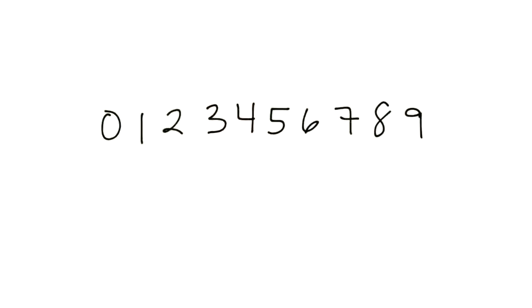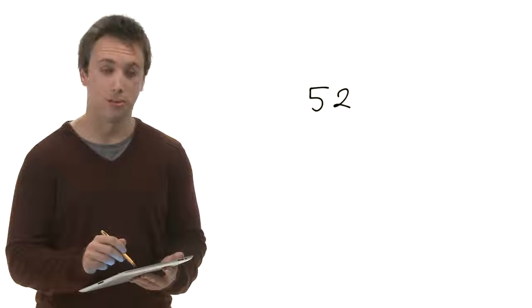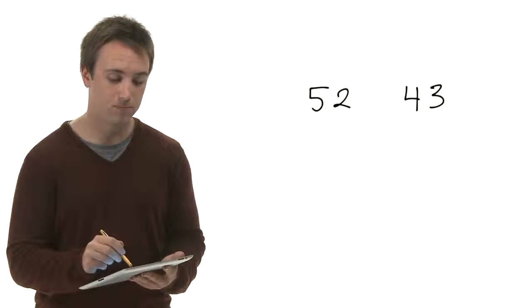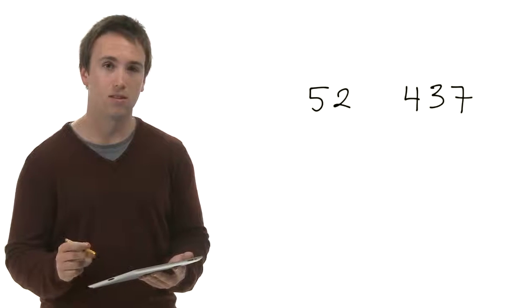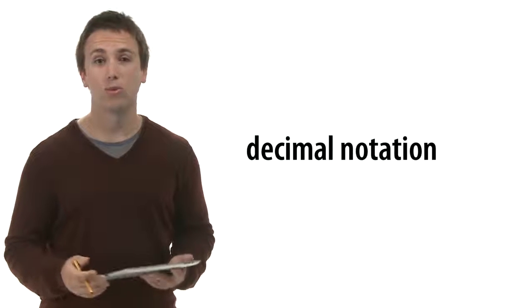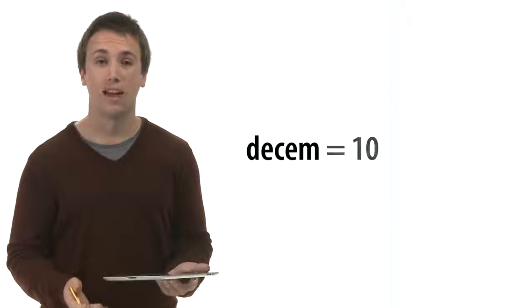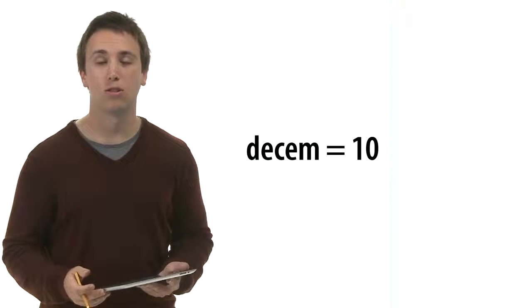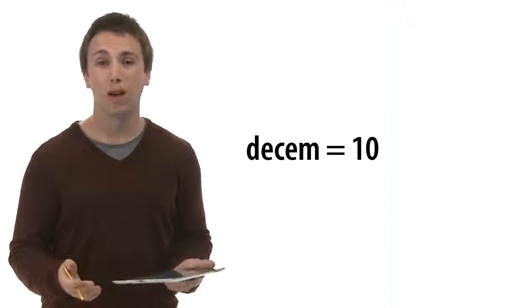Back when you learned how to read and write numbers, you learned about the digits 0 to 9. To write whole numbers larger than 9, you learned that all you had to do was use some combination of these digits, as in 52 and 437. So this way of writing numbers has a name: decimal notation. Why decimal? Well, the Latin root of decimal, 'decim', means 10, and when you have 10 digits in your notation system, 10 becomes a rather special number.